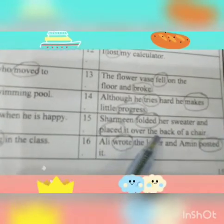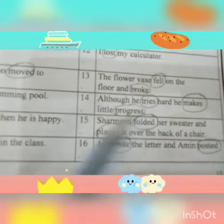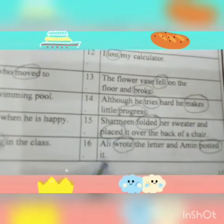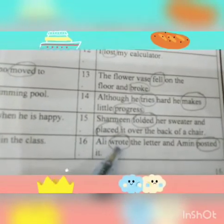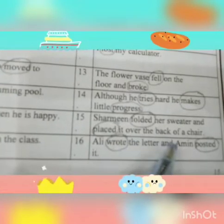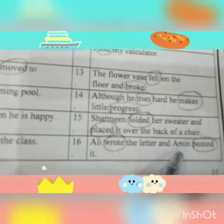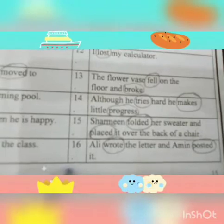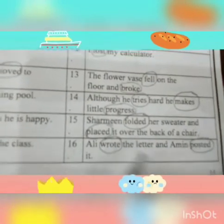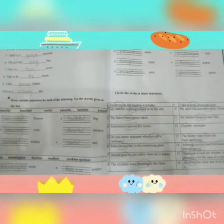Shirmeen folded her sweater and placed it over the back of a chair — 'folded' and 'placed' are both verbs, circle them. Ali wrote the letter and Ameen posted it — 'wrote' and 'posted' are the verbs, circle them.